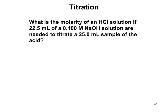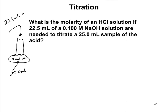The first thing I typically try to tell people to do is just draw a little sketch of what's going on. So in this case, you have a 25 milliliter sample of the acid — that's going to be a flask. We're going to have acid in here, 25.0 milliliters. We want to calculate molarity, capital M, which is what we don't know. But we do know that we have to add 22.5 milliliters of 0.100 molar NaOH to get to the endpoint of that titration.